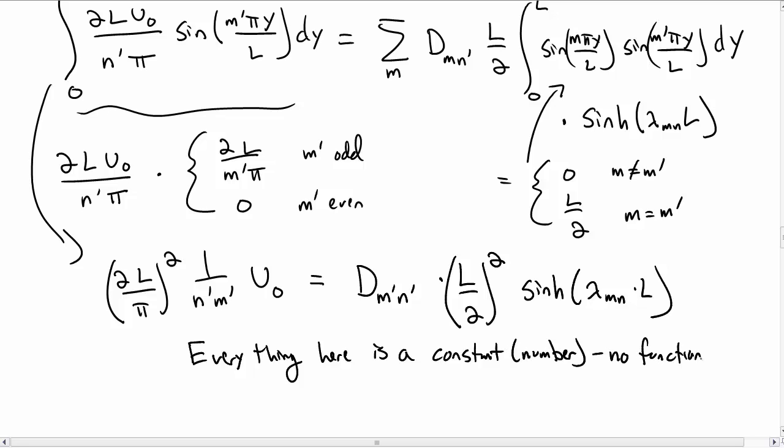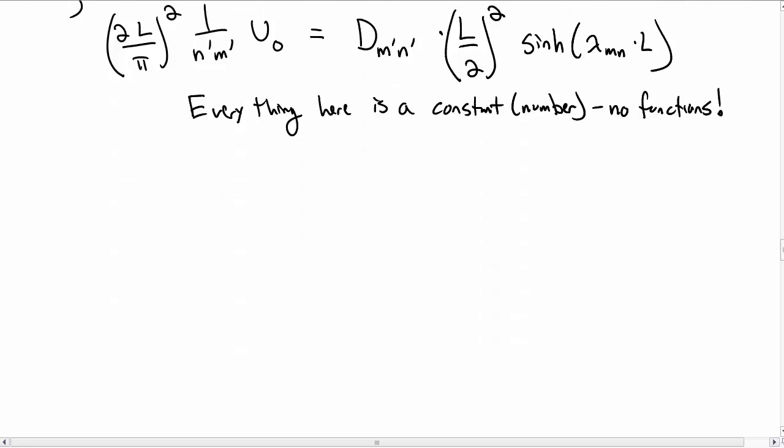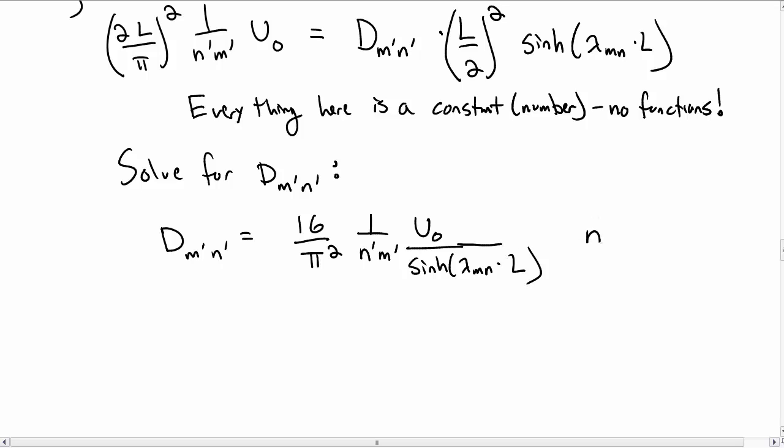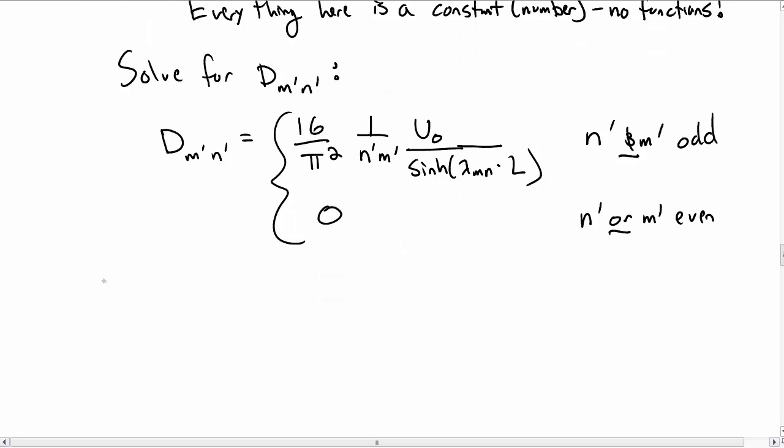Previously we couldn't because there were functions involved, but here there's no functions of x, y, or z, everything's a constant, so we just move the other junk over and solve for our unknown constants d_mn, or here we have primes on them. You get 16/(π²)·1/(n'm')·u_0/sinh(λ_mn·L), but you get that only if n' and m' are both odd. If either one of them are even you get zero. Notice I said 'or', so if any one of them are even you get zero. In order to get the non-zero result they both have to be odd.